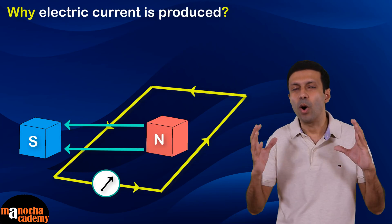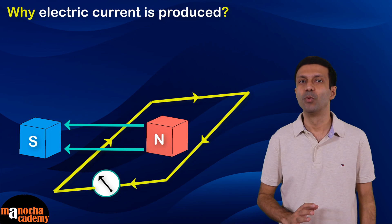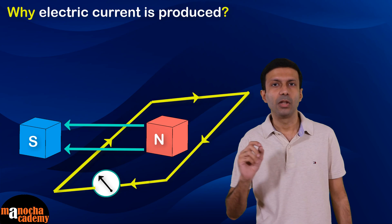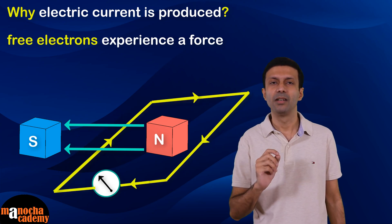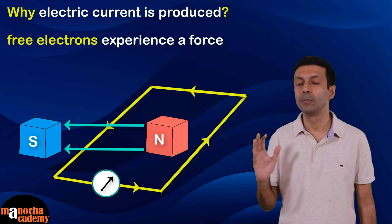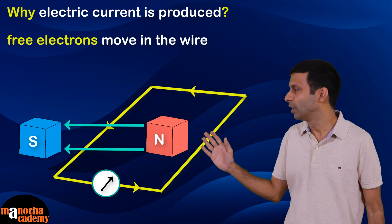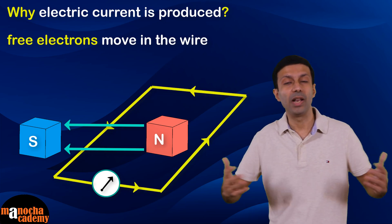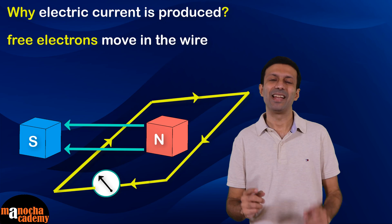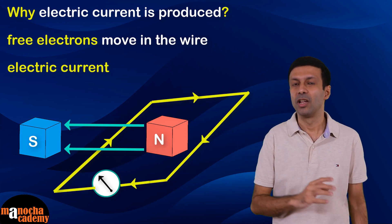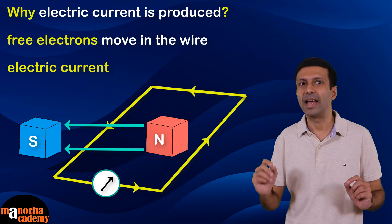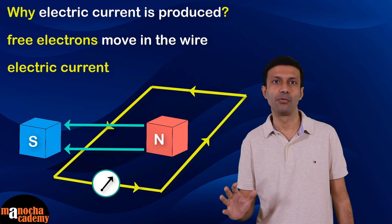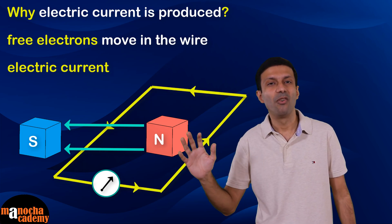Let's understand why electric current is produced in a wire when it is moved in a magnetic field. When the wire is moved in a magnetic field, the free electrons present in the wire experience a force. This force makes the free electrons move in the wire in a certain direction. The movement or flow of electrons is electric current. So when a wire is moved in a magnetic field, free electrons experience a force and flow, producing an electric current.